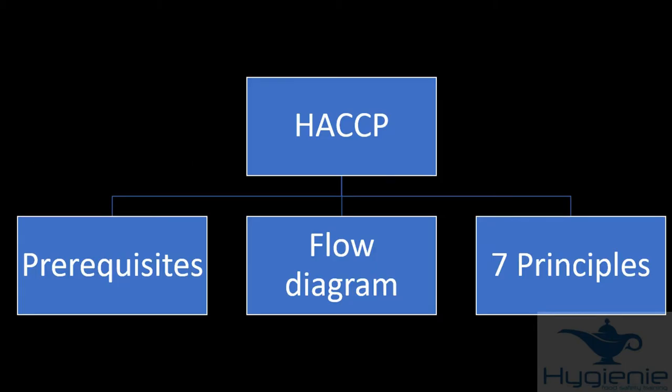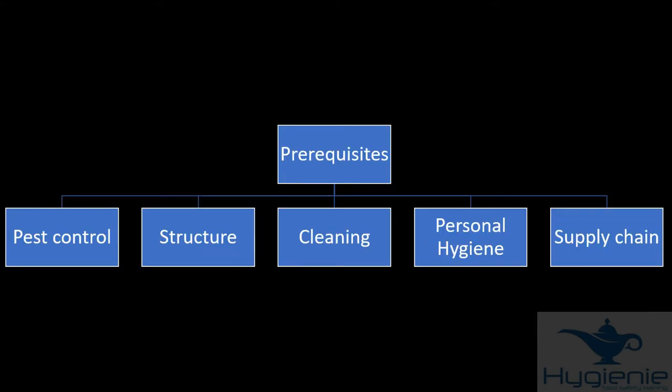HACCP essentially consists of three elements: prerequisites, flow diagram, and the seven principles of HACCP. Prerequisites are the standards that have to be in place for HACCP to work and they include pest control, structure, cleaning, personal hygiene and supply chain.